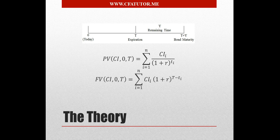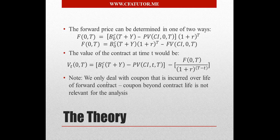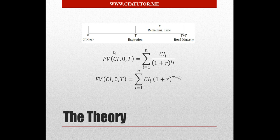In this case, we can use one of two methods to get to the forward price. We'd either take the present value of the coupons, and pay attention here that, as you can see from the note, we only deal with coupons that are incurred over the life of the contract. Coupons beyond the life of the contract are not relevant for the analysis.